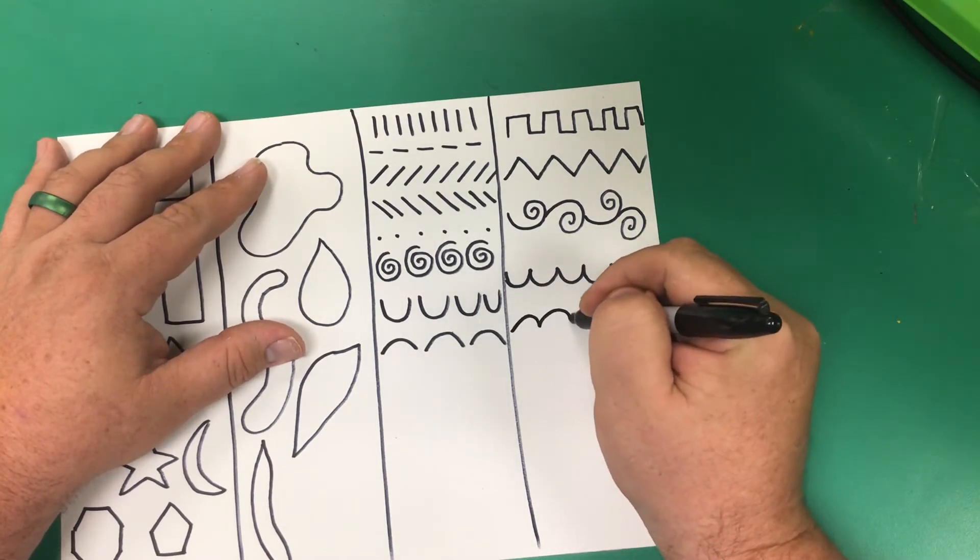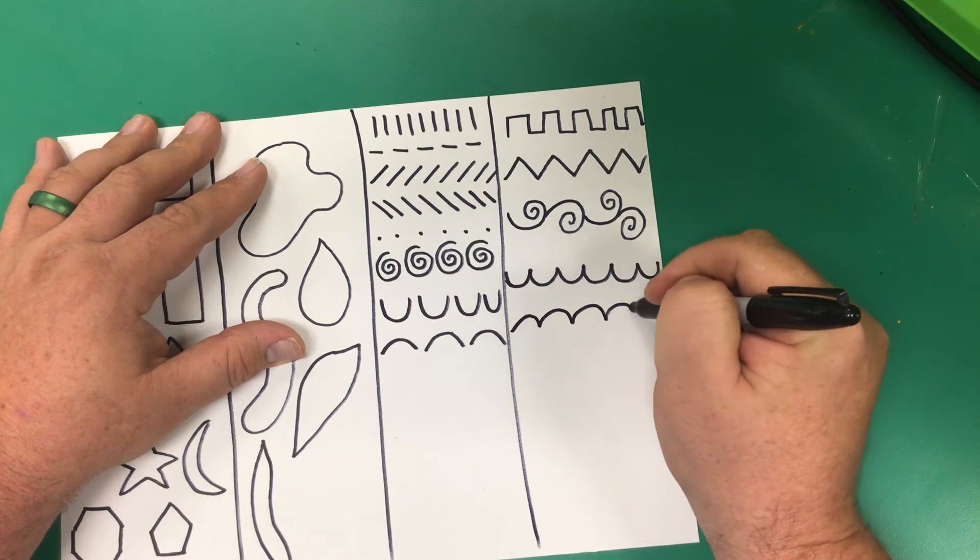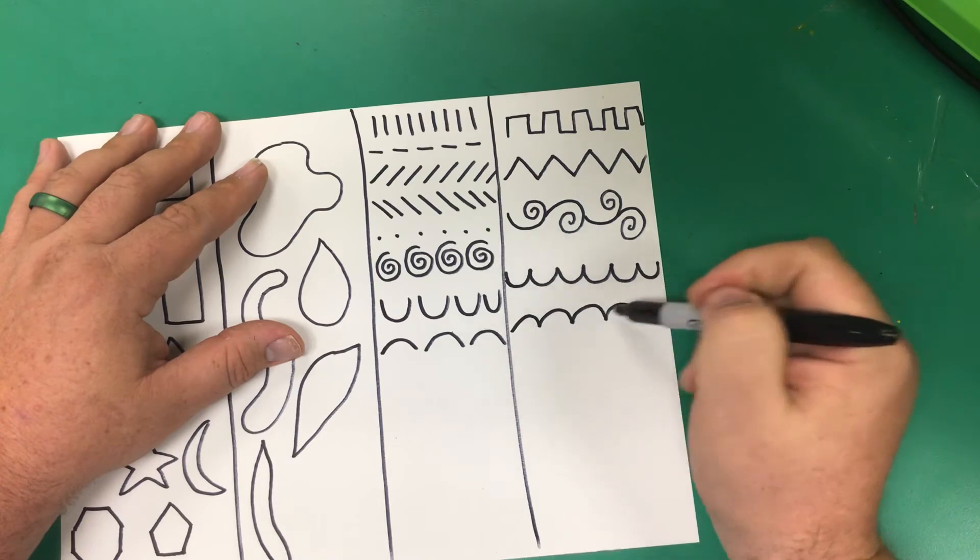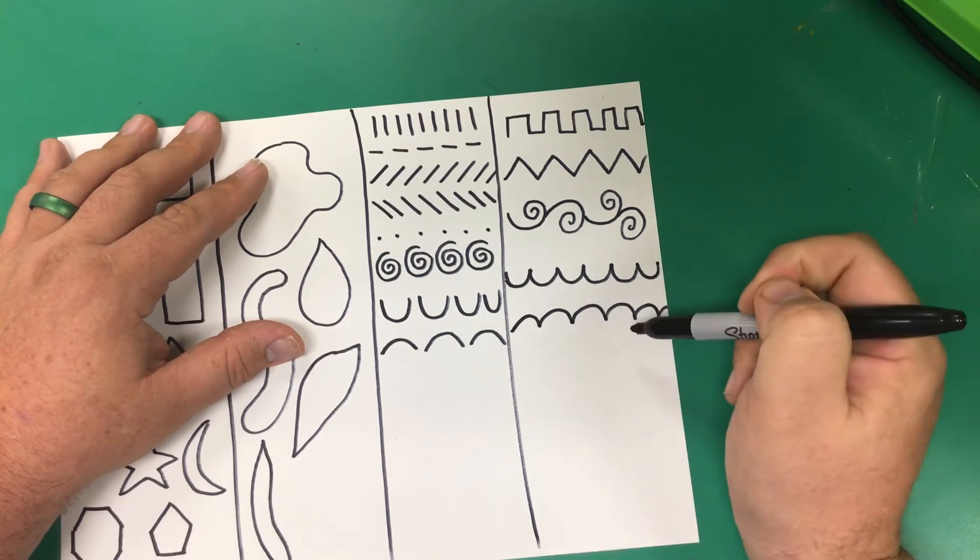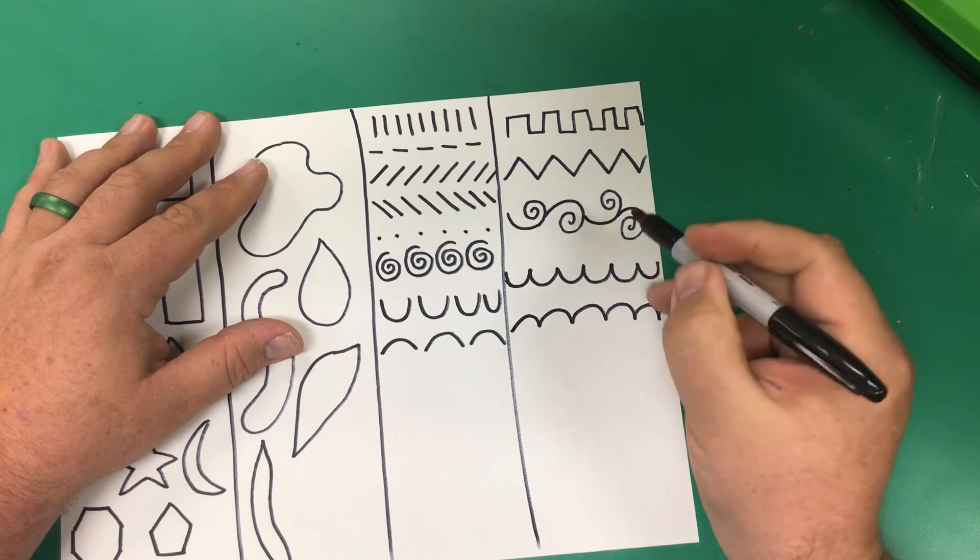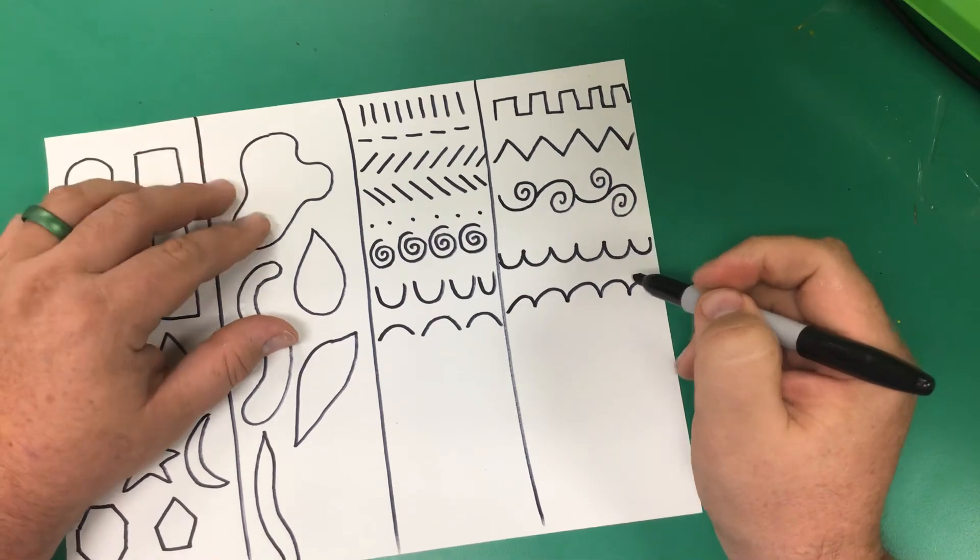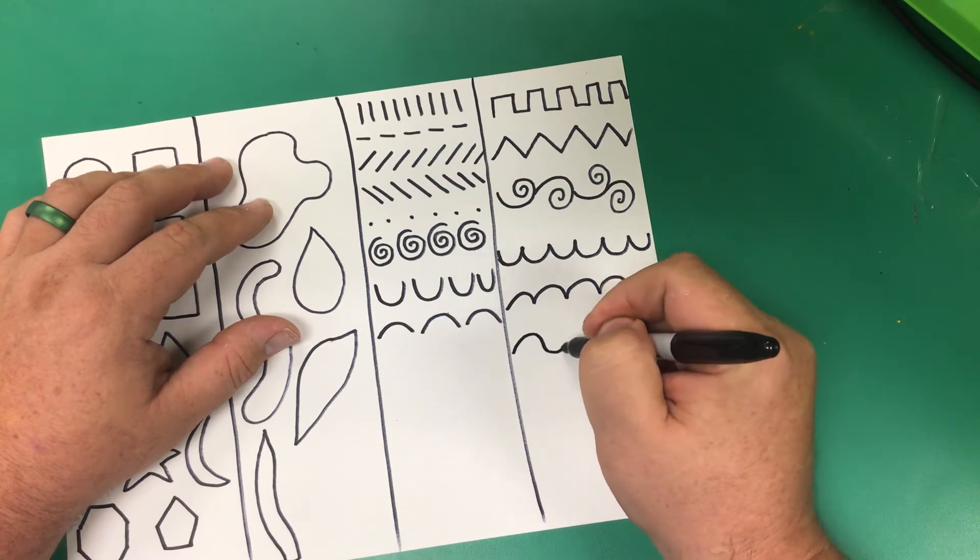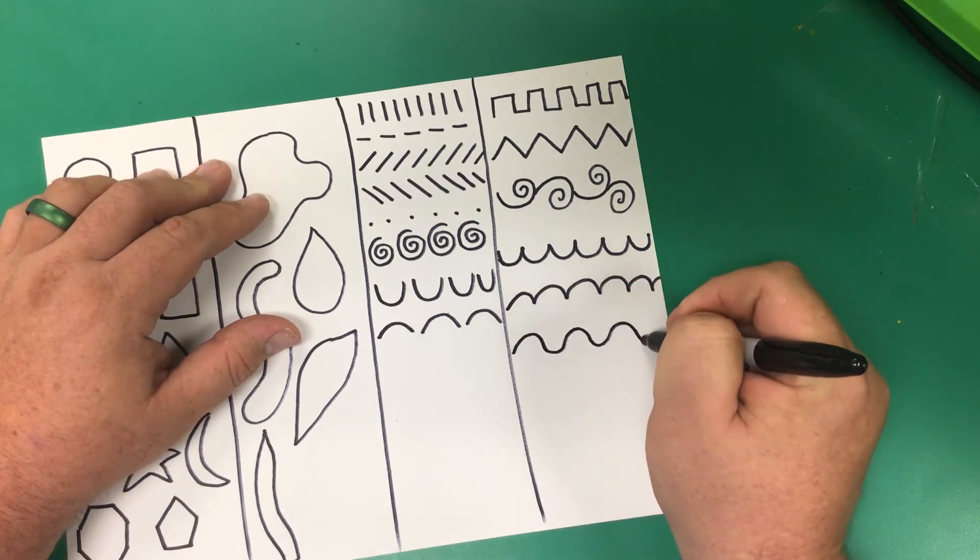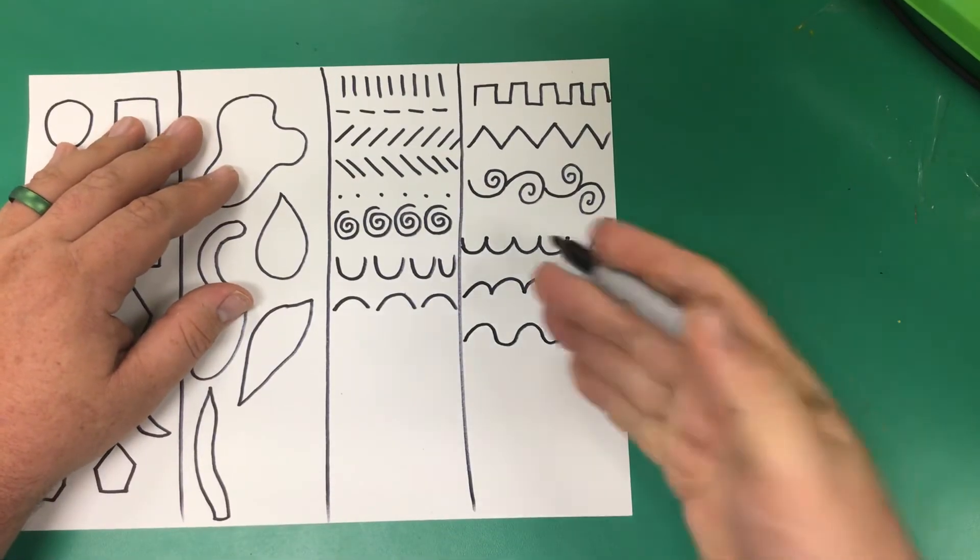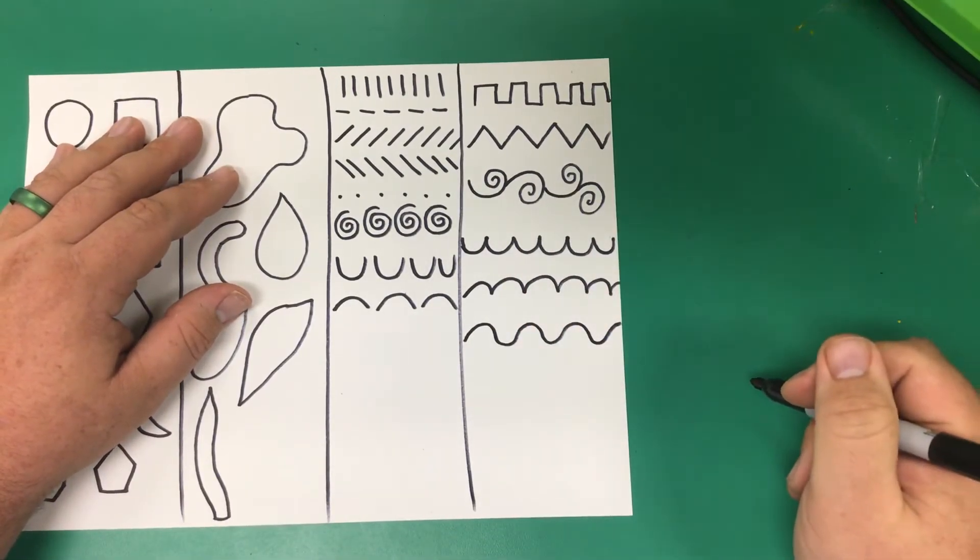Then we have down curves and put those together. That is also called a scallop. This would be the top of a cloud or maybe hills. Then we can put down curve, up curve, down curve, up curve. This is a wave line. It's good for waves or hills. That would work very well.